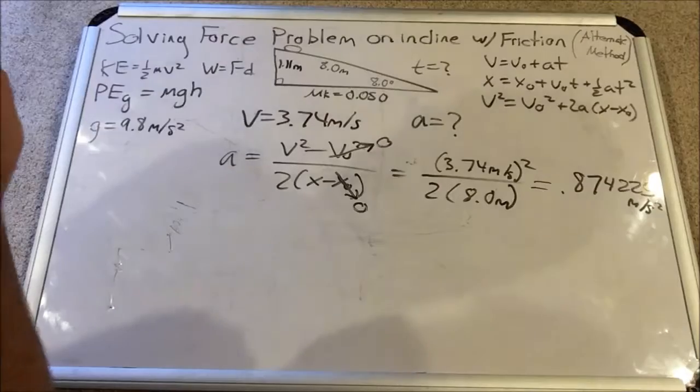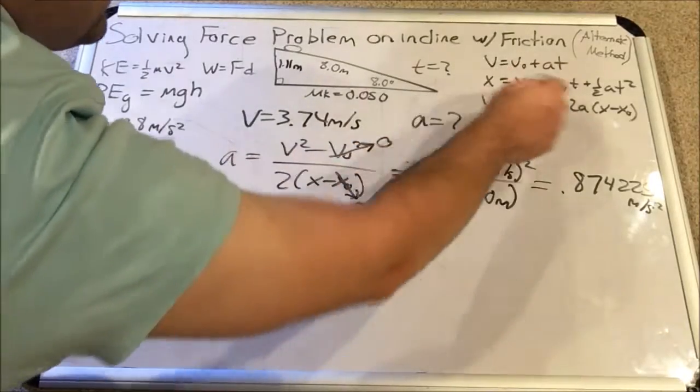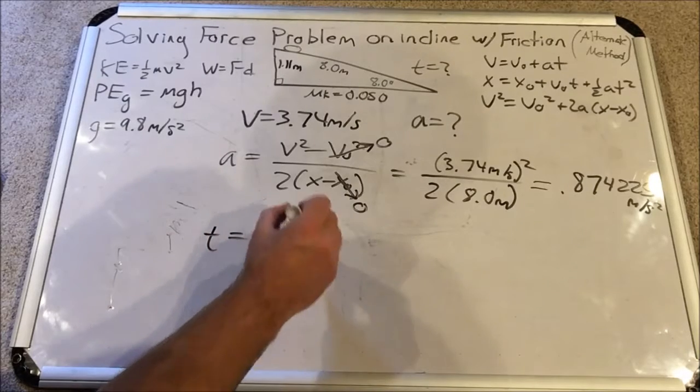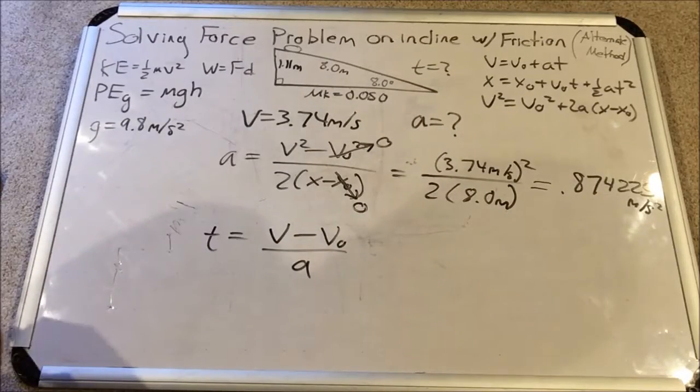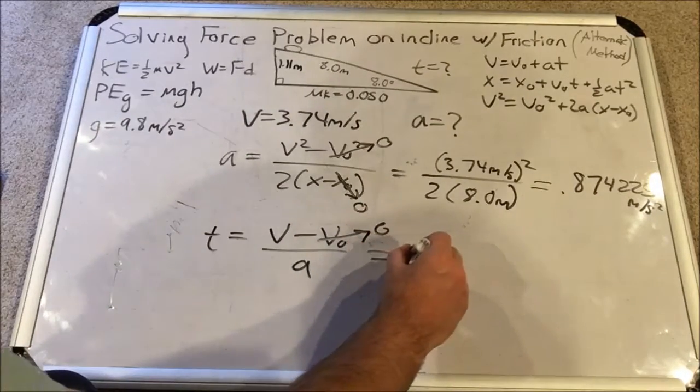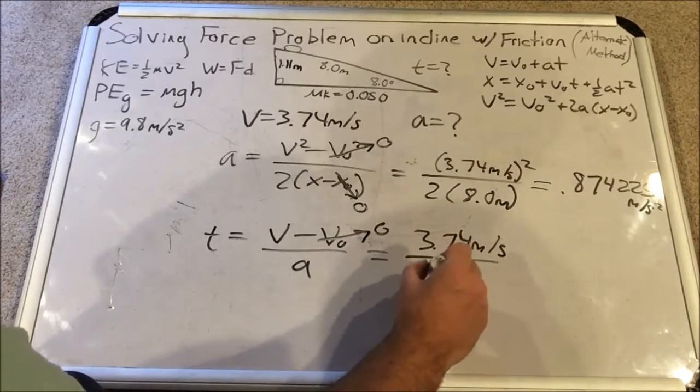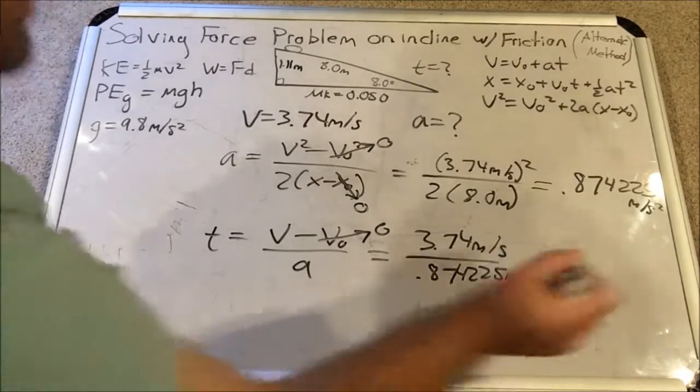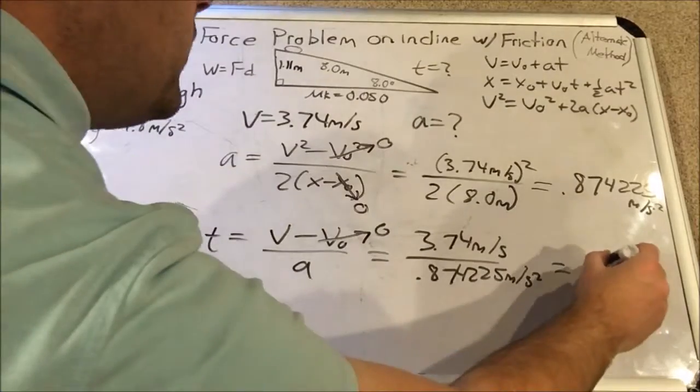I don't need to use the second kinematic equation to find time like I did in the last video. I can use the first one, which is excellent. So let's take this one and solve for time. So we get that time would equal the final velocity minus the initial velocity over the acceleration. That's how time is solved for in that first equation. And again, the initial velocity is zero. So this just boils down to plugging in the 3.74 meters per second for v and the 0.874225 meters per second squared for a. When you compute this, you get the following.